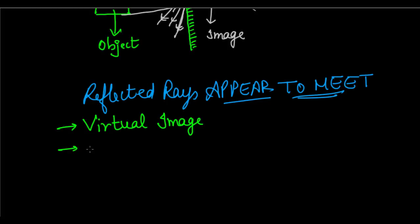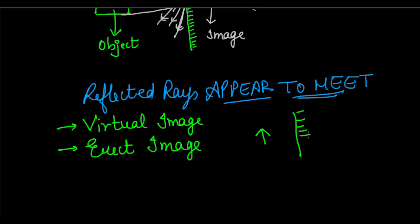The image is erect. If the object is arranged upright, the image is also upright. If the object is downright, the image is also downright. The image and object are arranged in the same manner — it is exactly an erect image, just like the object.